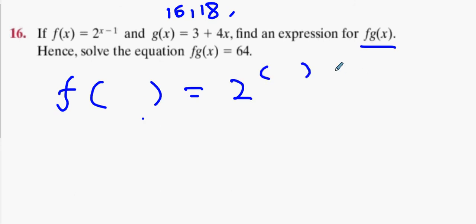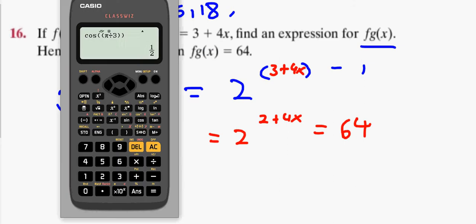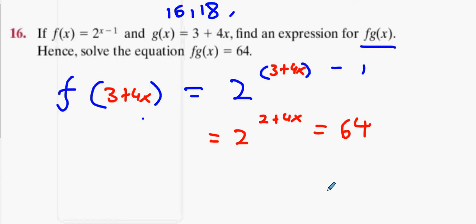We're going to do the f function using the input of the g function, which is 3 + 4x. So we're going to get 2 to the power of (2 + 4x) equals 64. There's two ways of doing it. You could put 64 into your calculator and do shift—in fact, does that work? 2 to the power of 6. Now we've got 2 to the power of 6. What do you reckon the answer is then? 2 + 4x equals 6, so x equals 1.